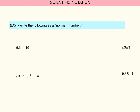Now let's look at examples where we take a number in scientific notation and convert it to a normal number. Here we have 9.3 times 10 to the fourth. Because the exponent is 4, you must move the decimal four places to the right — one, two, three, four — and each one of those positions represents a zero. In this case we wind up with 93,000.